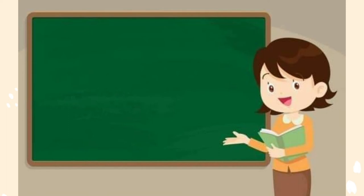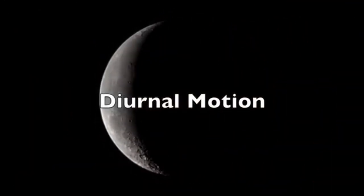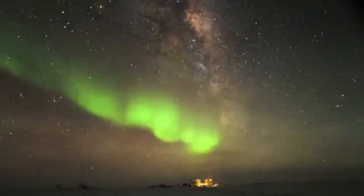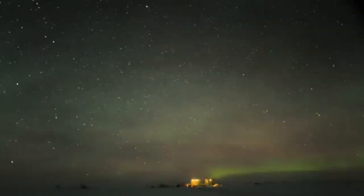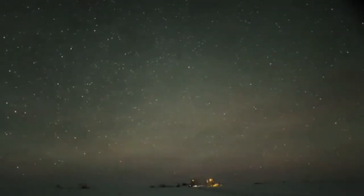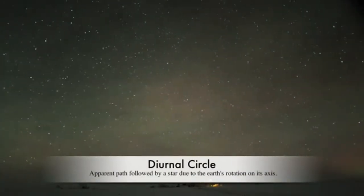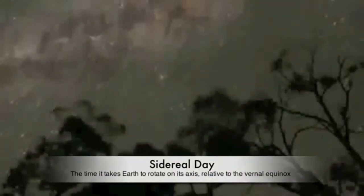Number 1: Diurnal motion. Diurnal motion is the apparent movement of stars and other celestial bodies around the earth as a direct effect of the earth's rotation on its own axis. By watching stars for more than a few moments, you'll see that they appear to move across the sky. This is known as diurnal motion. The stars will appear to trace circles throughout their orbit, known as the diurnal circle. From our reference point, it takes a star about one sidereal day to complete a circle — a time period of 24 hours.